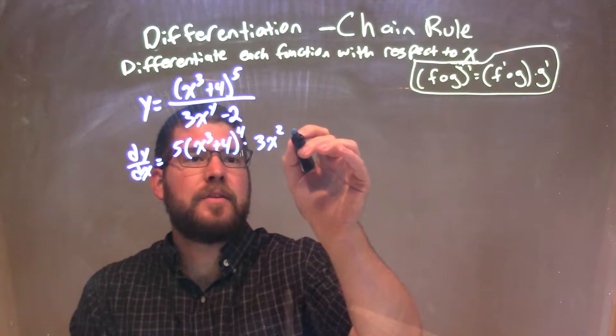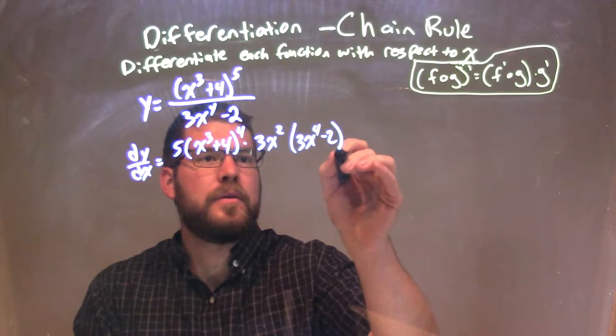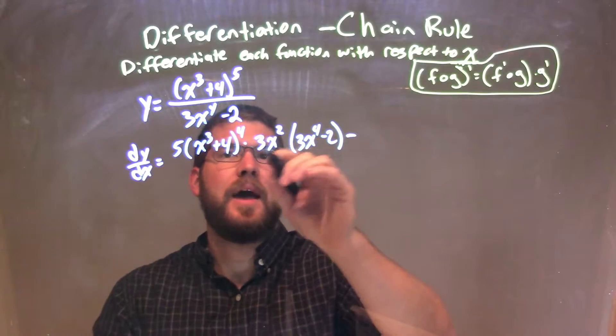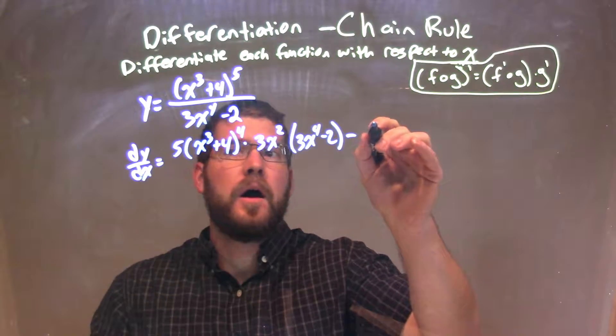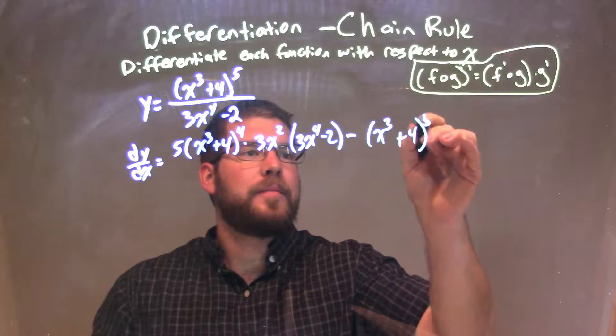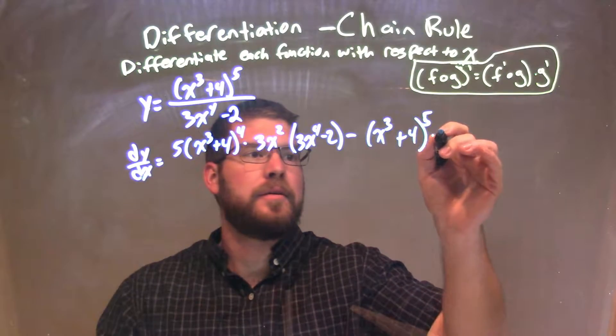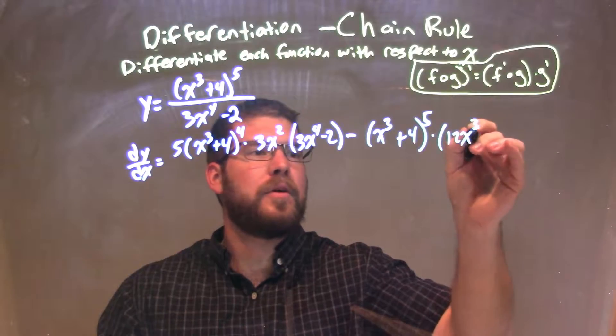Times g, which is times the denominator, 3x to the fourth minus 2, minus f, which is my numerator, x to the third plus four to the fifth power, times g prime, derivative of the denominator, which is 12x to the third.